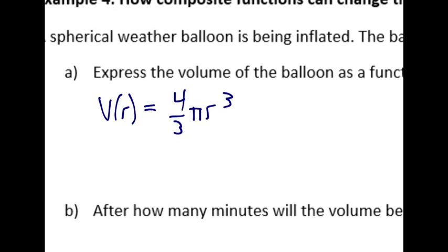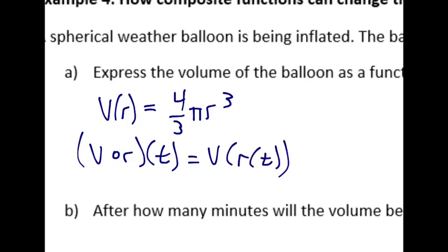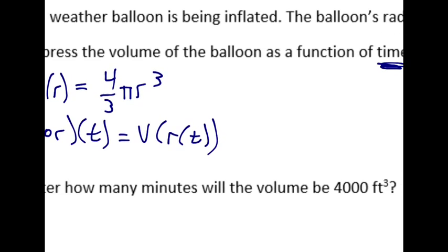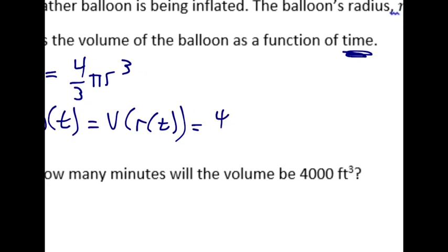Essentially what you're doing is you're going v of r of t, right? You're taking v and inserting r of t. So you get 4 over 3 pi root t, that's what r is equal to, cubed.